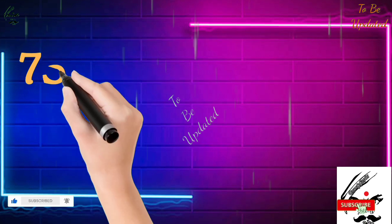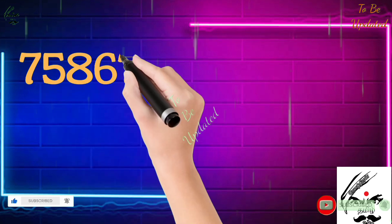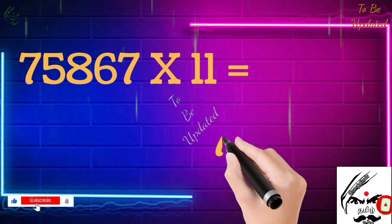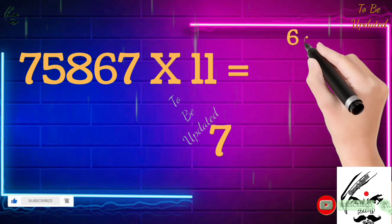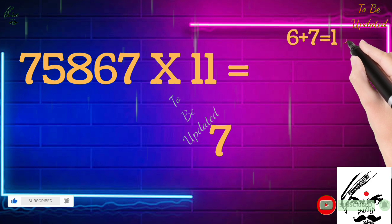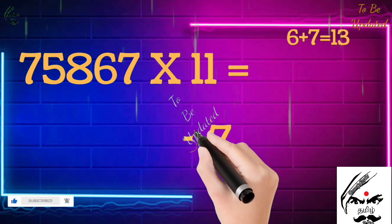75867 times 11. Pay full attention. The unit digit is 7, so we write 7 as it is. Previous letter of 7 is 6. 6 plus 7 is 13, so we just write 3 and we take the 1 as a remainder.